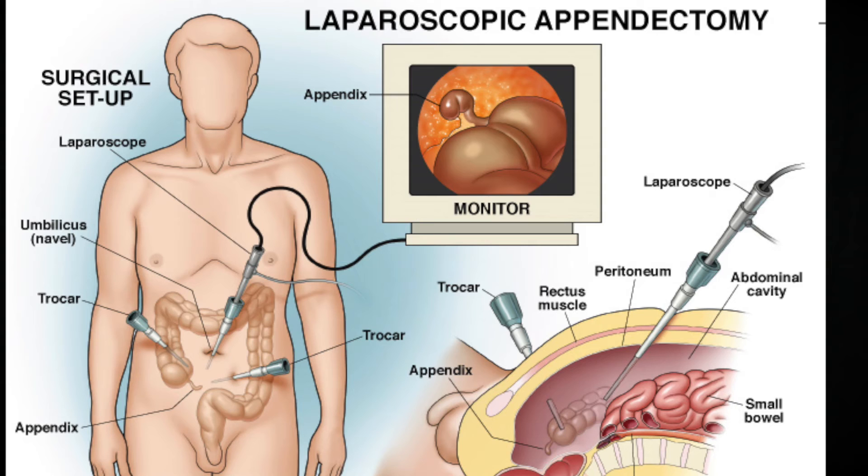And then laparoscopic surgery. During laparoscopic surgery, the doctor makes a few much smaller cuts in the belly throughout the abdomen. They then put long thin tools into the belly through these openings. One of these tools is called a laparoscope or a camera on one end.